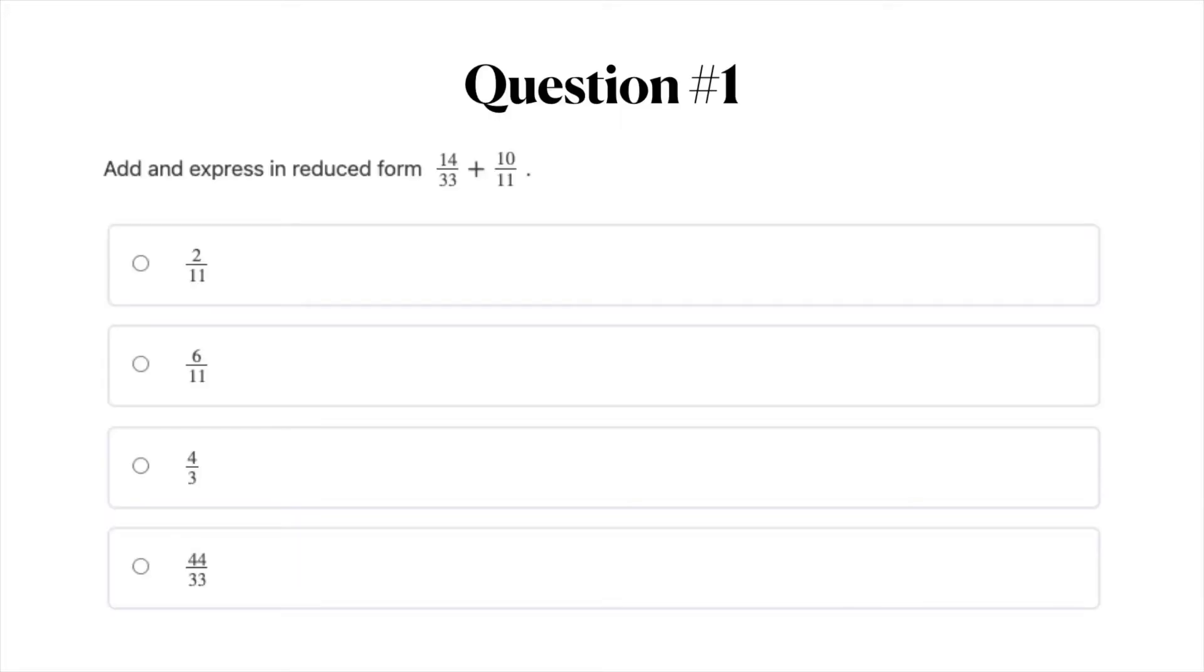Alright, so question number one. Add and express in reduced form 14 over 33 plus 10 over 11. The answer options are A, 2 over 11, B, 6 over 11, C, 4 over 3, and D, 44 over 33. Go ahead and pause the video here to take some time to answer this question and when you're ready you can move on.